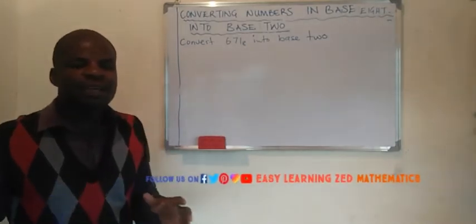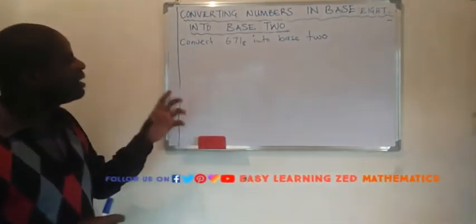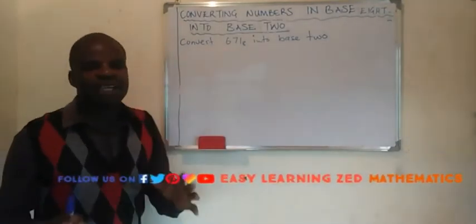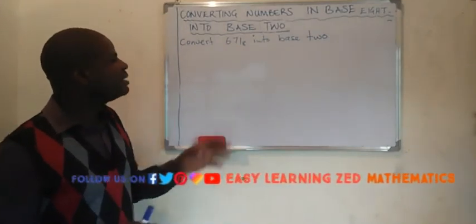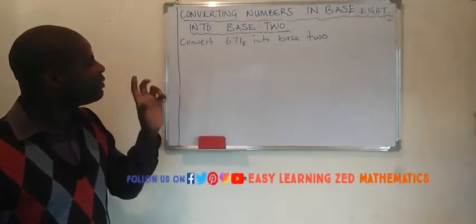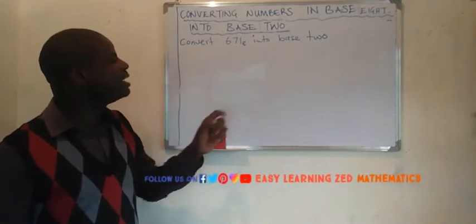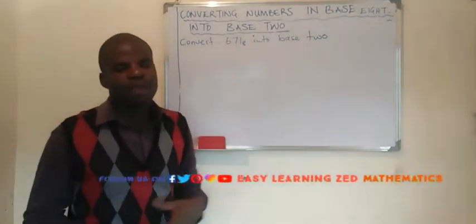What we're going to do basically is we're going to convert the number given in base 8 into base 10 first. After that, then we're going to convert that number we've gotten in base 10 into base 2.